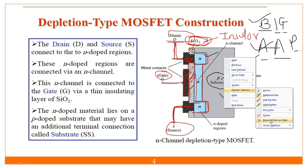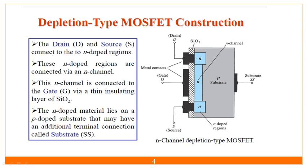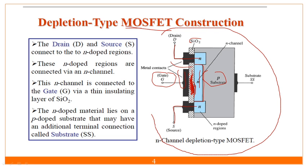The drain and source are directly connected to the semiconductor via metal. But the gate is not at all connected to the semiconductor — it is separated by the insulating SiO2 layer. Here we have metal, then oxide (silicon dioxide), then semiconductor. That overall configuration is called Metal Oxide Semiconductor — which is why this is called a Metal Oxide Semiconductor Field Effect Transistor.